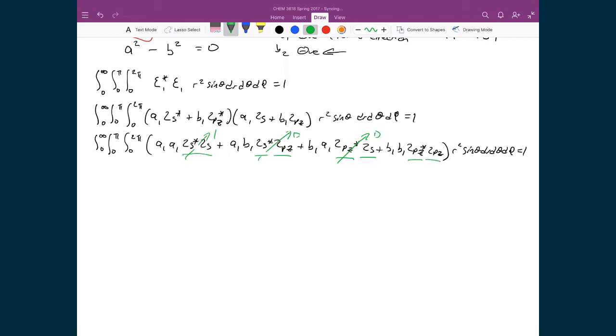2P Z star and 2P Z, those two terms are normalized. That means that's going to be equal to 1, which means that the result of this integral is A1 squared plus B1 squared is equal to 1.